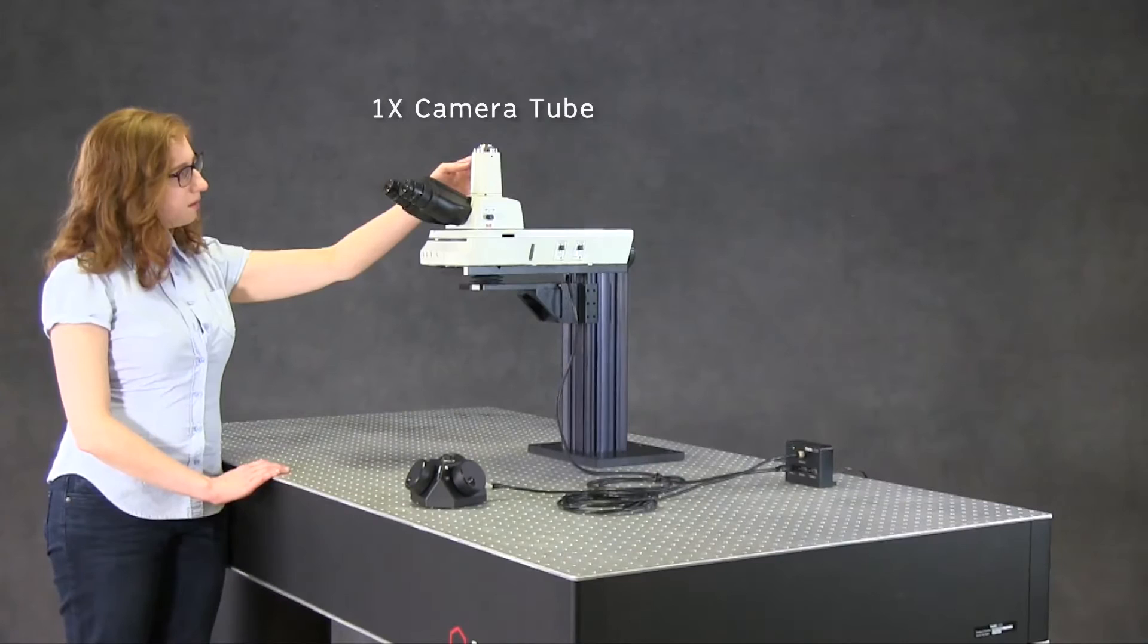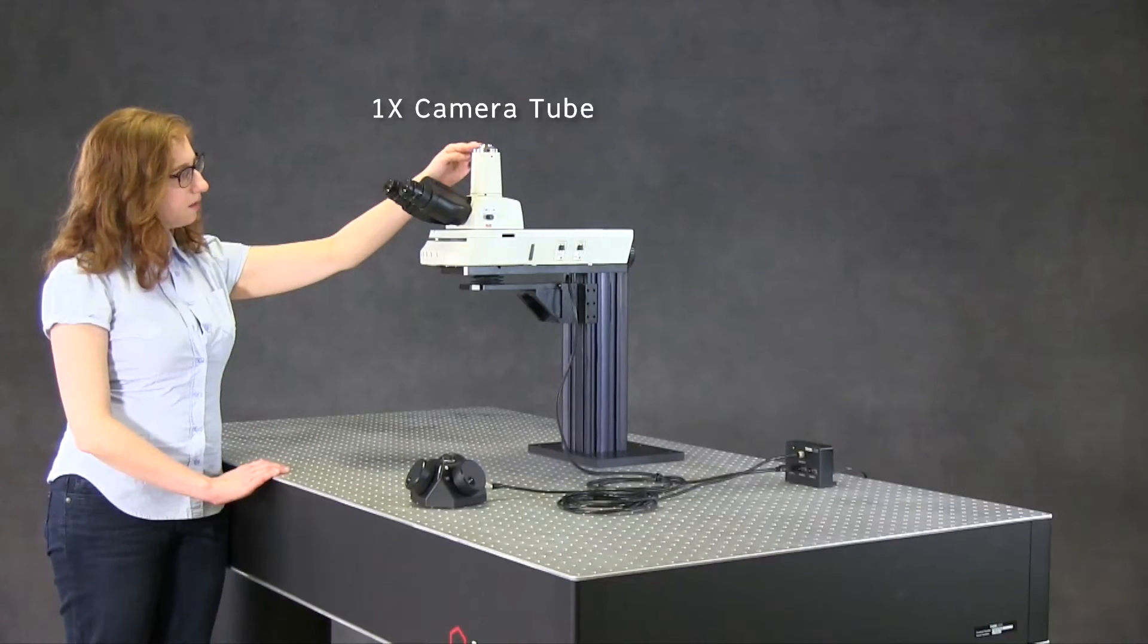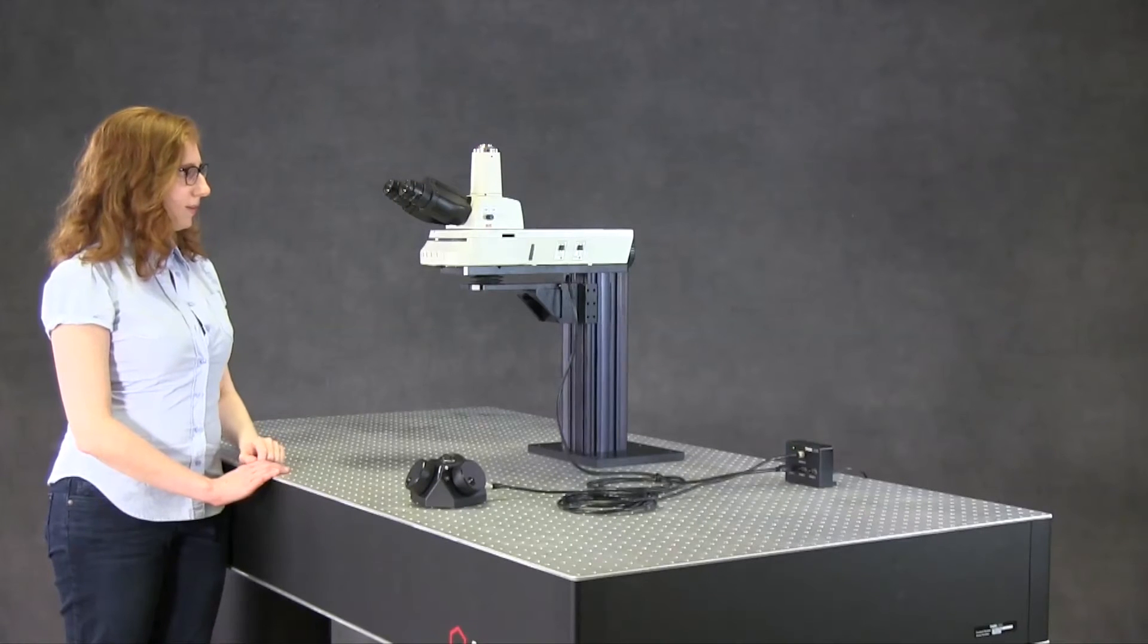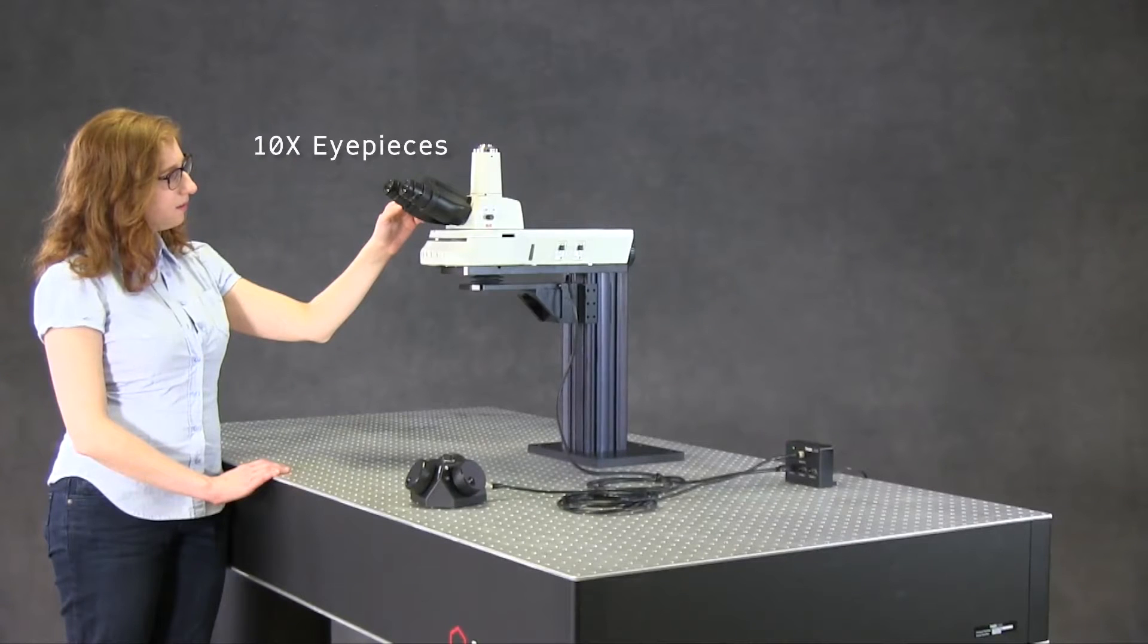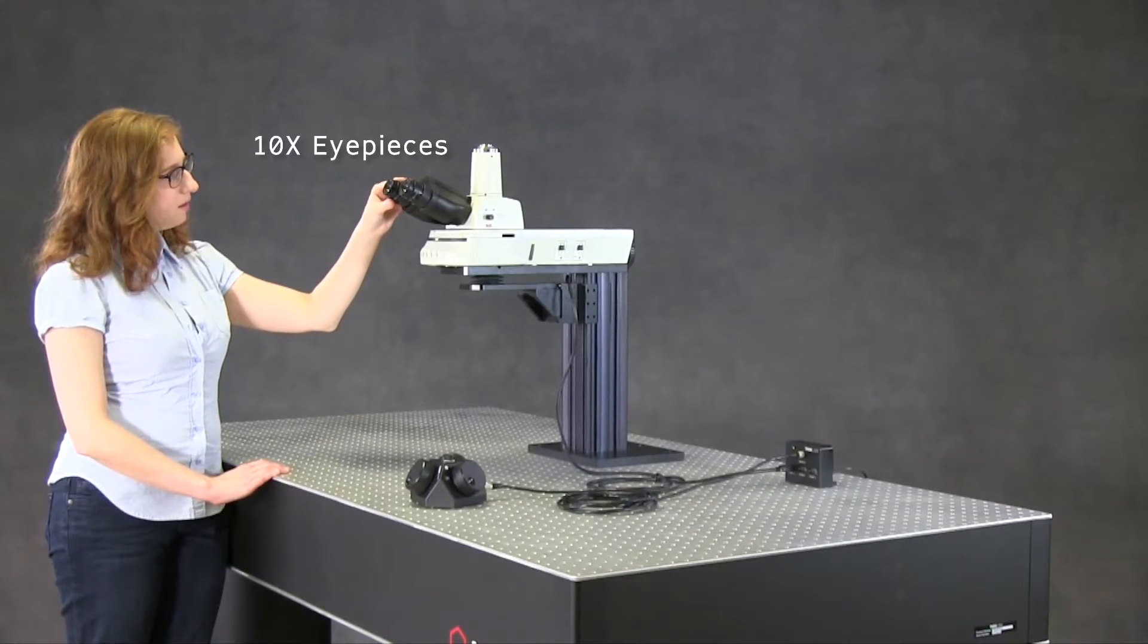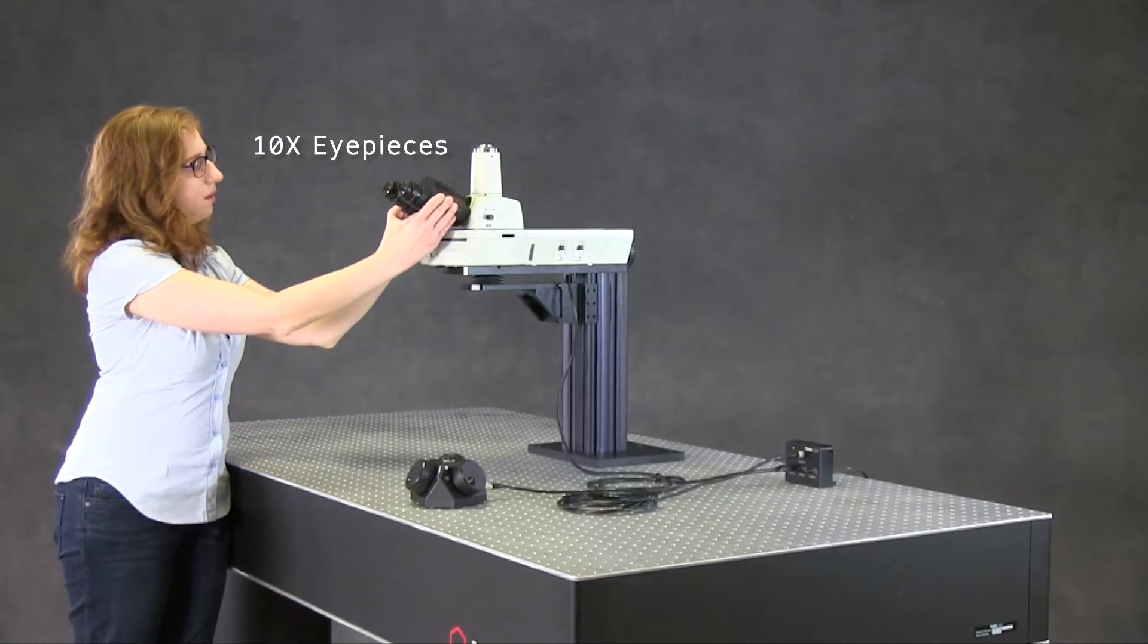The camera tube on top offers 1x magnification and C-mount threads for industry standard cameras. The eyepieces offer 10x magnification and have adjustable focus and interpupillary distance.